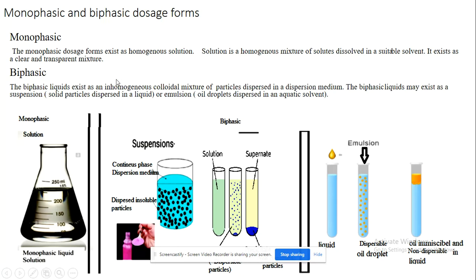The definition of biphasic is different from that of monophasic: monophasic forms are homogeneous, but biphasic forms are inhomogeneous. Monophasic is a uniform (متجانس) and clear transparent mixture (رائق وشفاف), while biphasic forms a colloidal mixture (خليط غروي) — a cloudy, impure mixture.